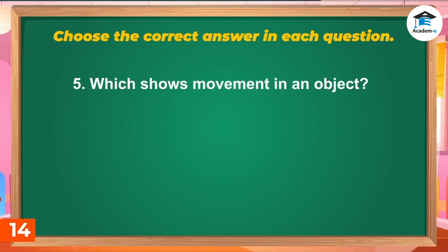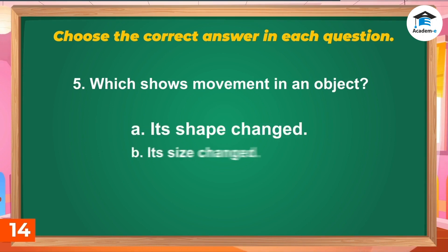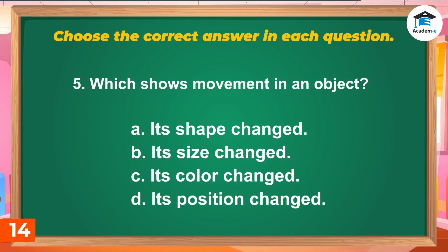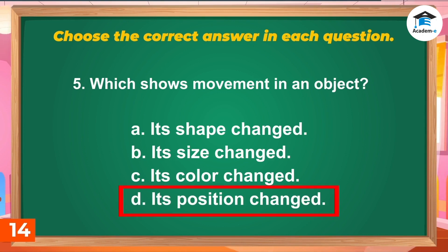Question 5: Which shows movement in an object? A. Its shape changed, B. Its size changed, C. Its color changed, D. Its position changed. Answer: D. Its position changed.